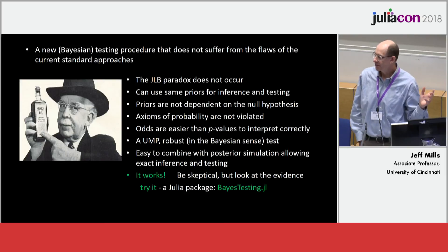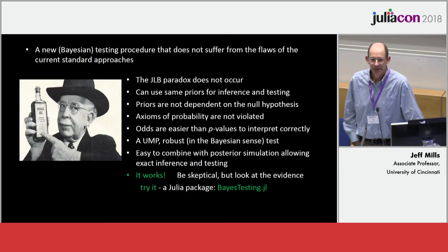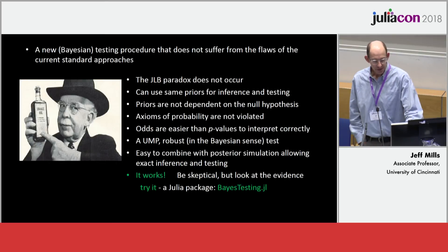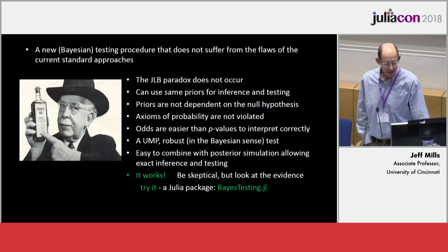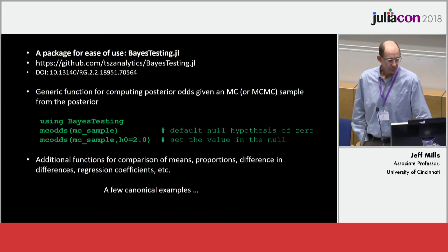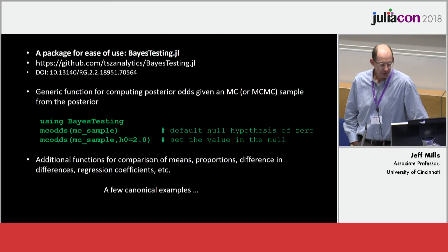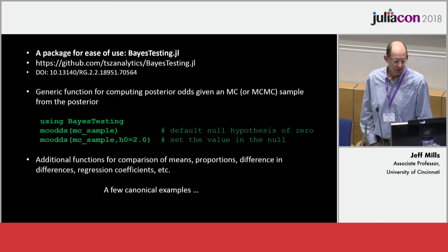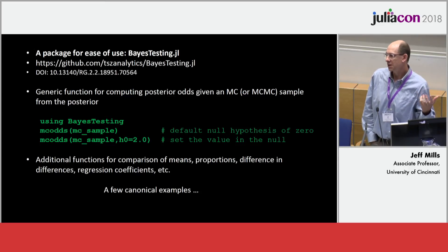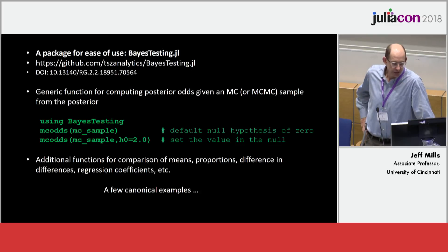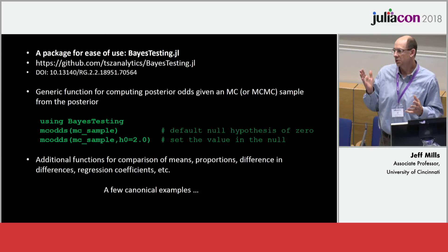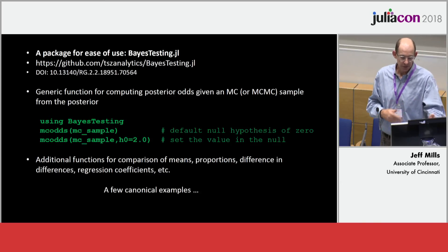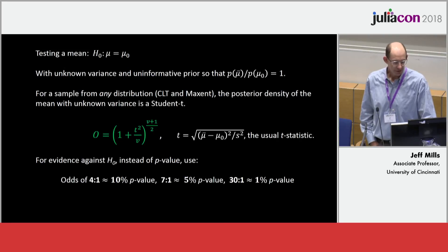If you're a scientist, you should be skeptical — we'd all be dead from drinking snake oil otherwise. So that's the motivation for the package: to make this easy to use. The package provides functions for comparing means, the usual hypothesis tests, proportions, difference in differences, regression coefficients, and so on. But the core is really just one function that takes any Monte Carlo sample — a Markov Chain Monte Carlo sample or any posterior simulation draws — looks at the kernel density, computes the mode, the density value at the mode, and the value under whatever null hypothesis you specify.